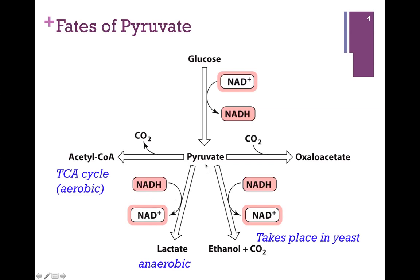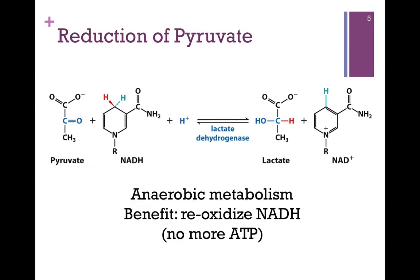We can also take pyruvate and through anaerobic metabolism convert it to lactate. Here we have the reduction of pyruvate to produce lactate. As you can see, we don't get any more energy out of this process — no more ATP is generated. Lactate or lactic acid is actually a waste product, thought to be associated with muscle soreness following anaerobic muscle building.